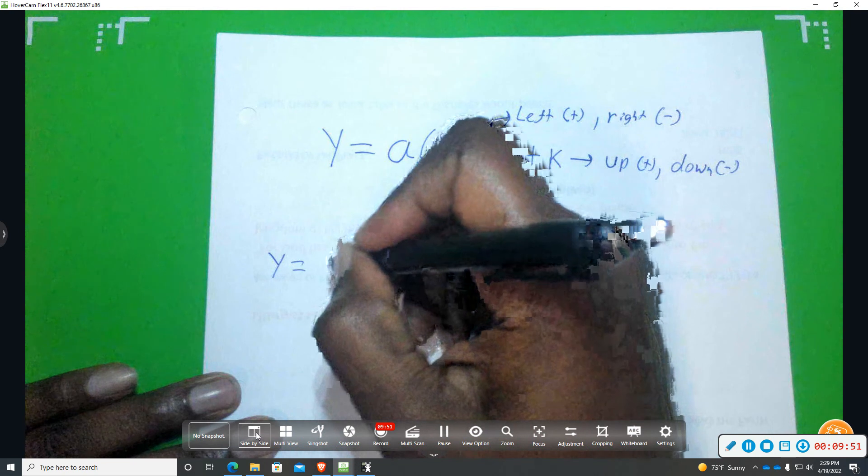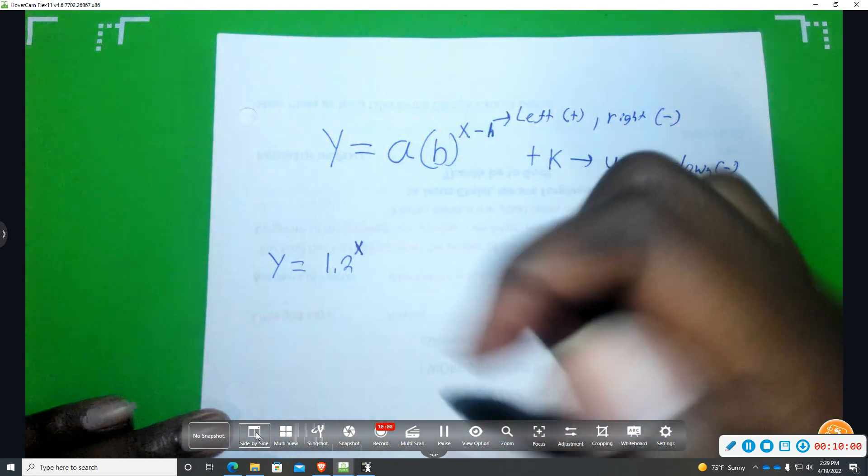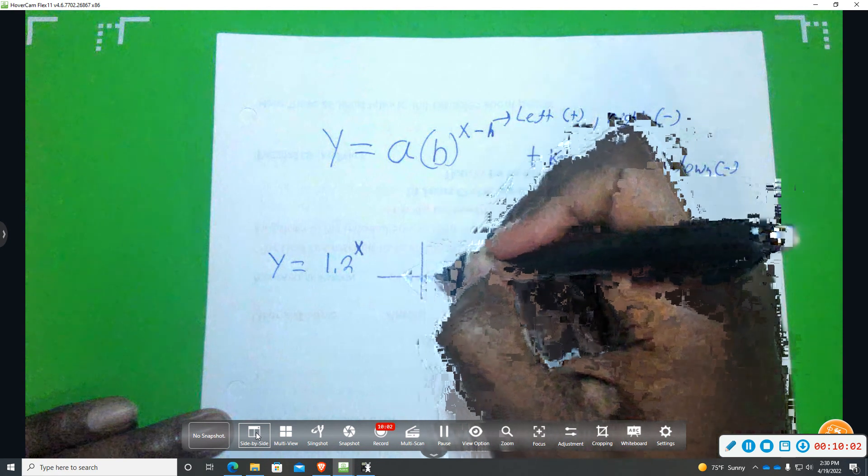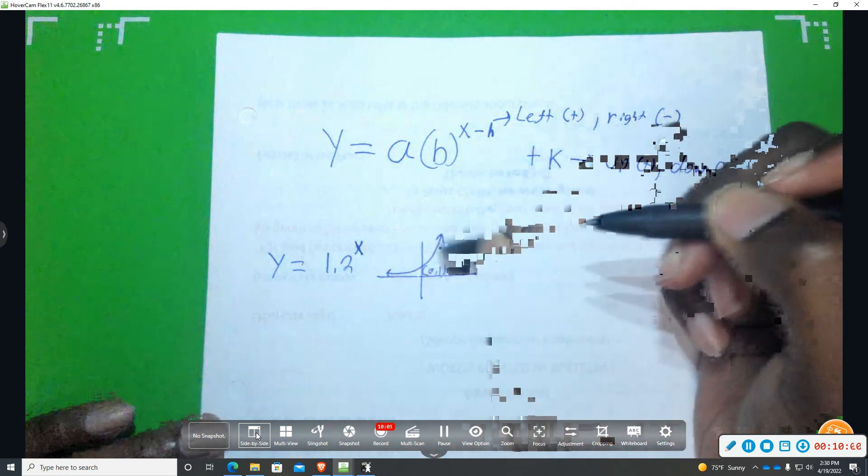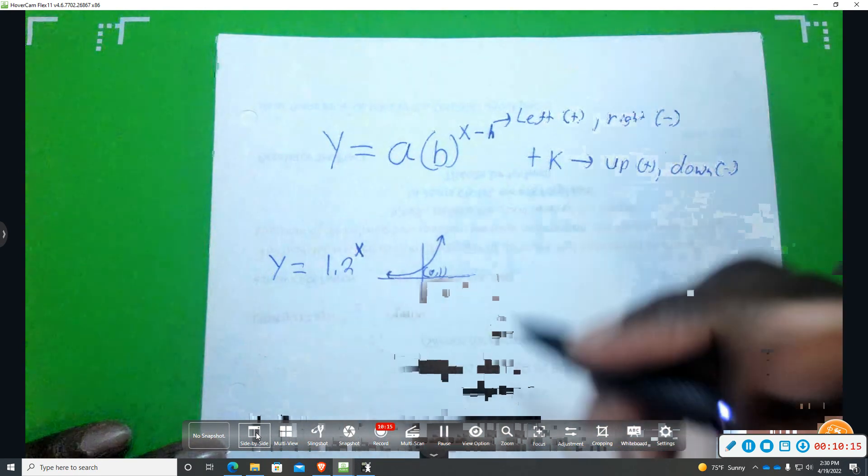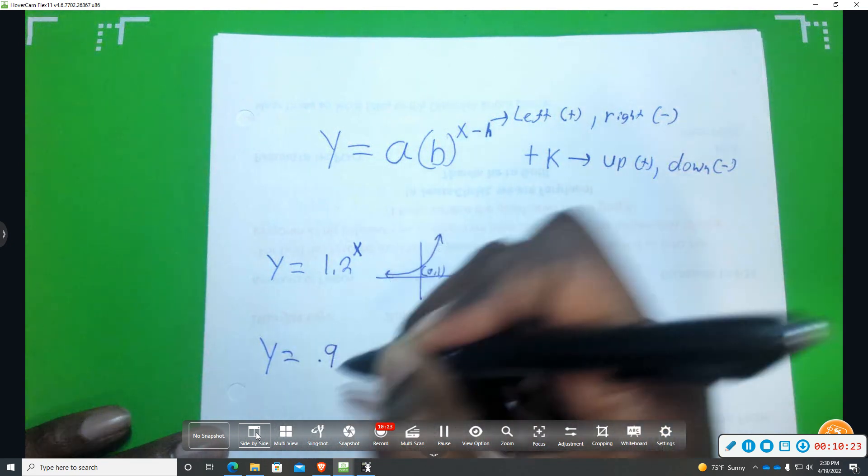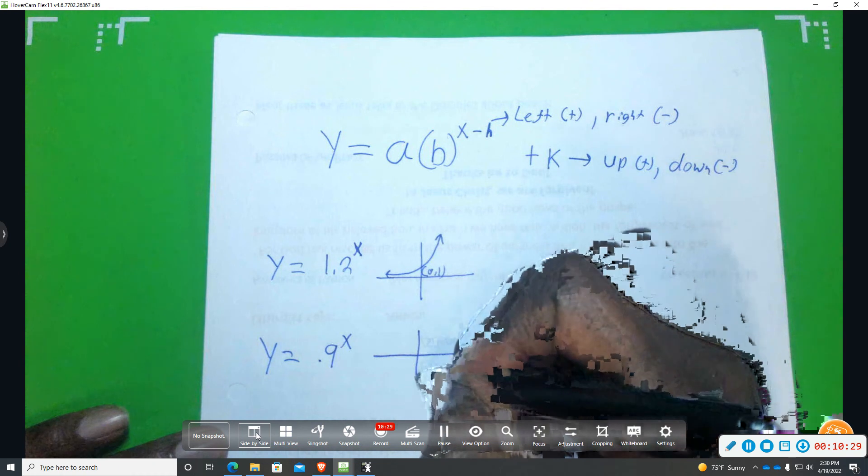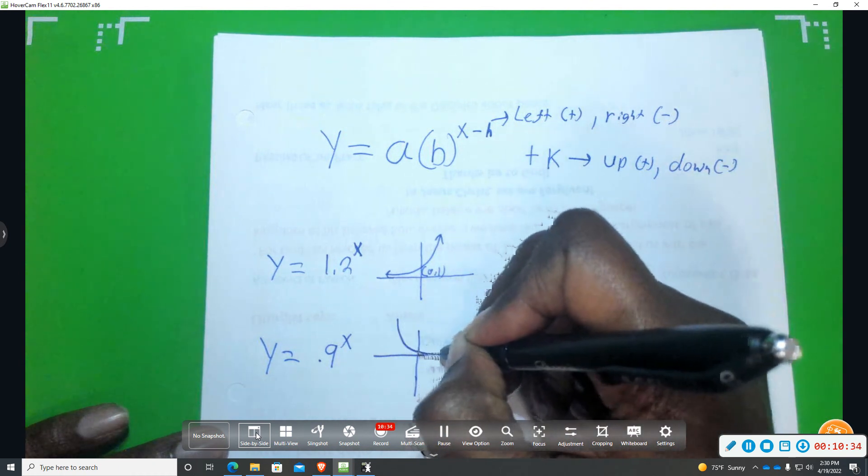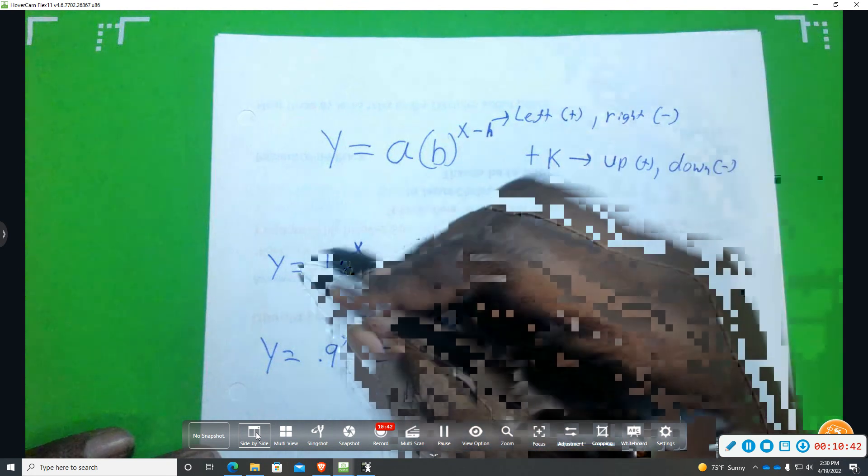If you have y equals 1.2 raised to the x, it is bigger than 1, so your graph will be increasing. Going through that point 0, 1 always, unless you have some shift. Then, you also have something that could be less than 1, let's just say 0.9 to the x power. So, this graph will look like decay, so it will be coming down from left to right and just hugging that x axis, still going through that point 0, 1.